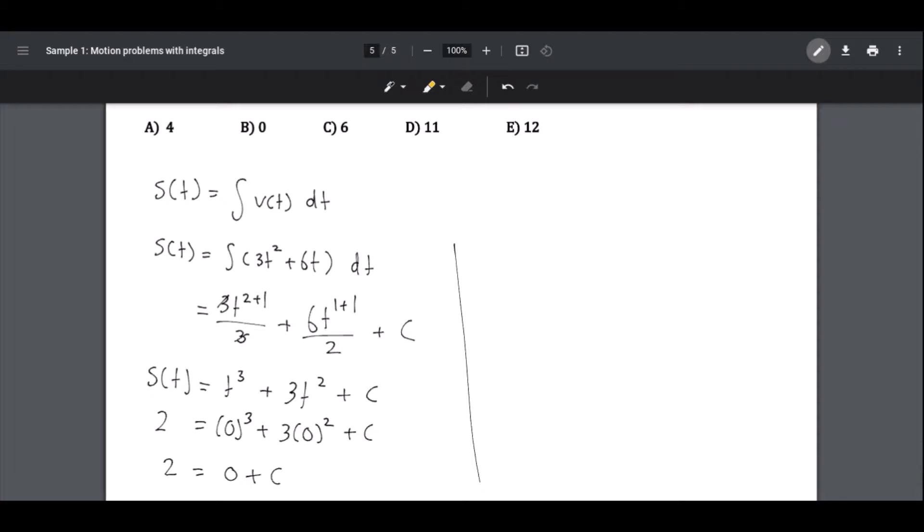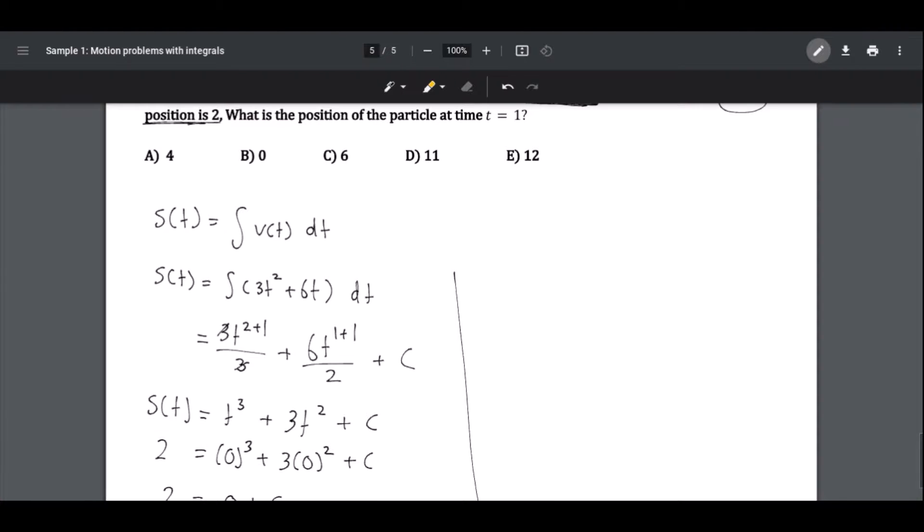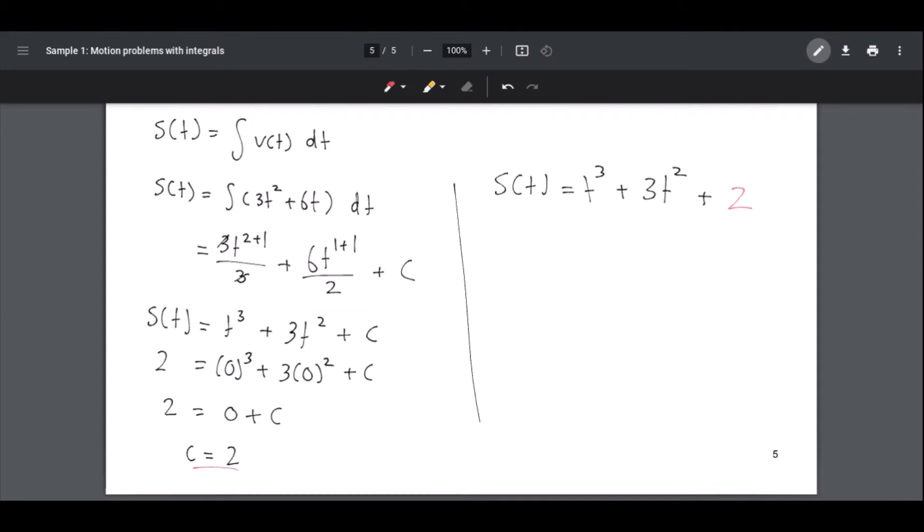Now let's write the position. s(t) is equal to t³ plus 3t² plus 2, since c is equal to 2.